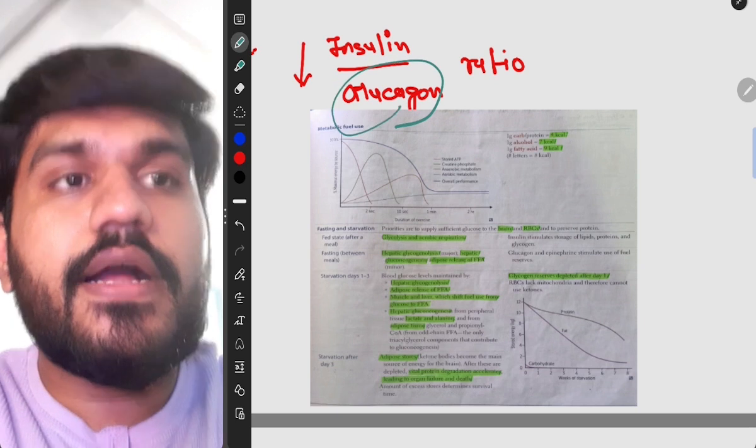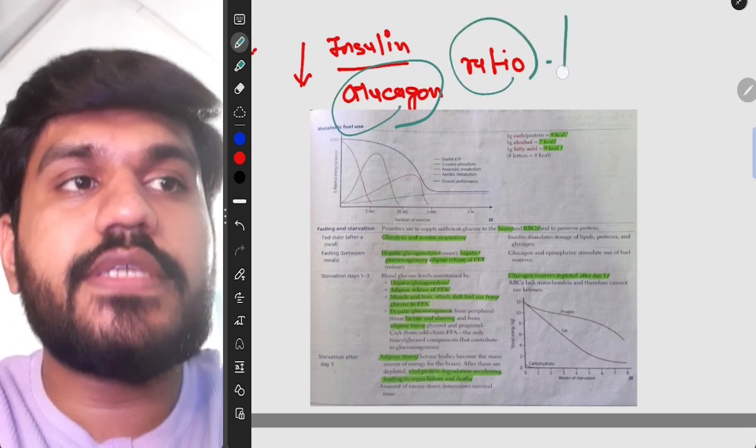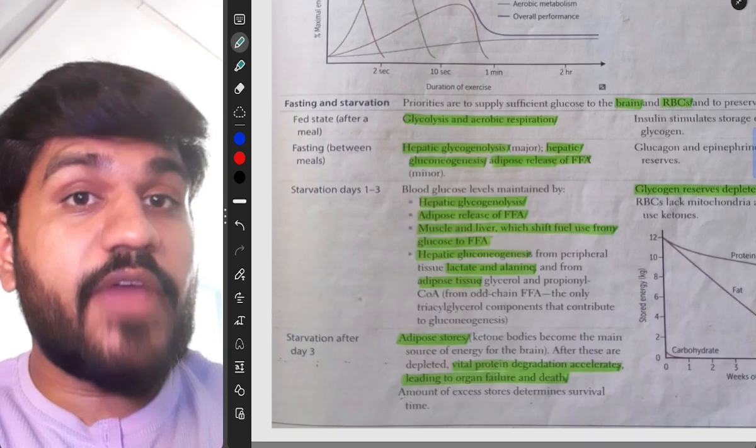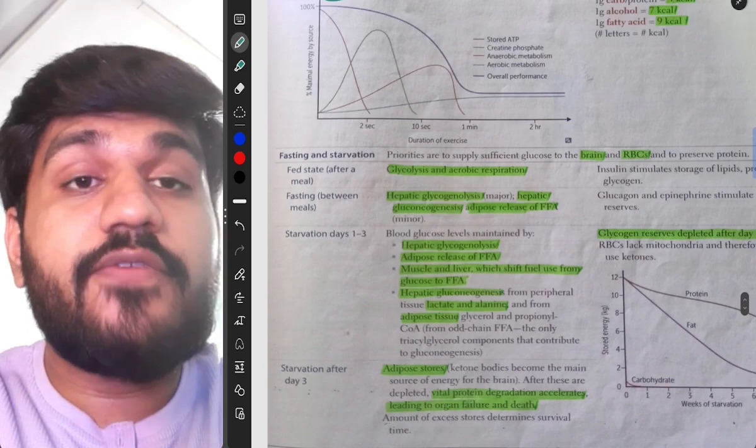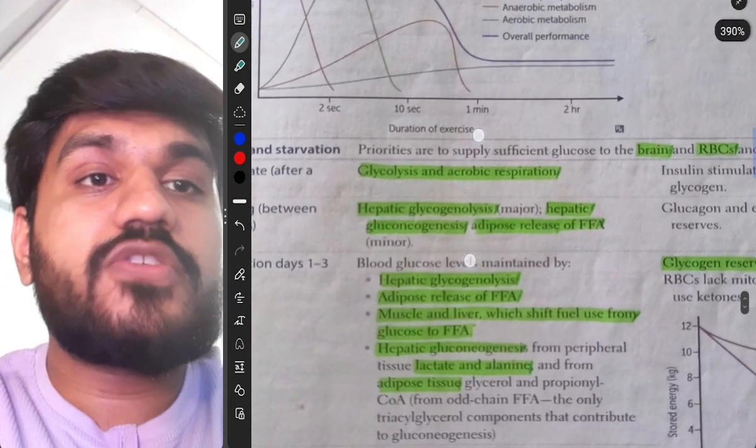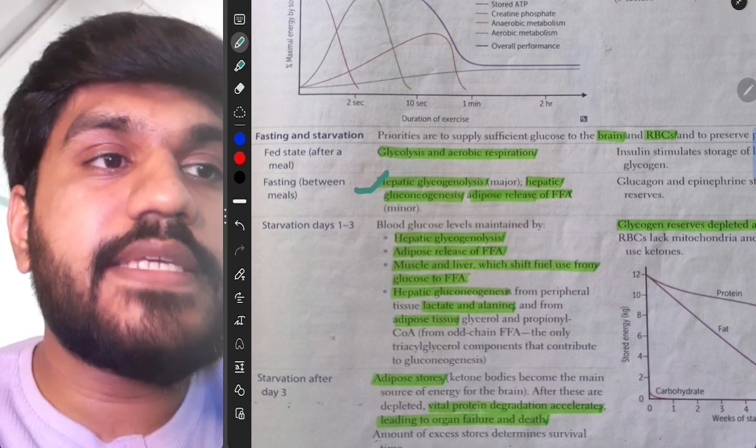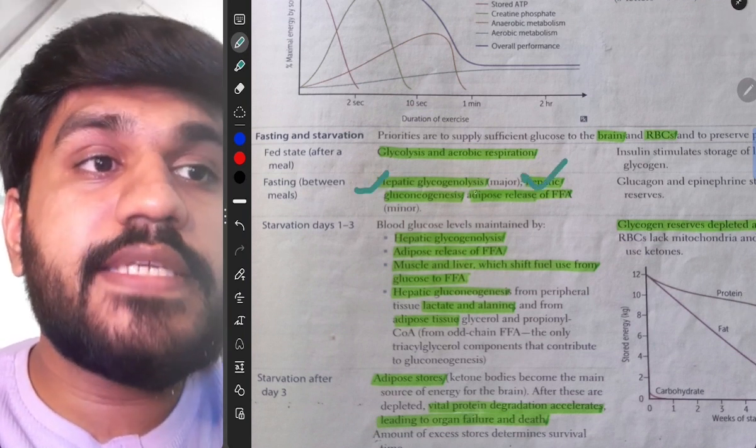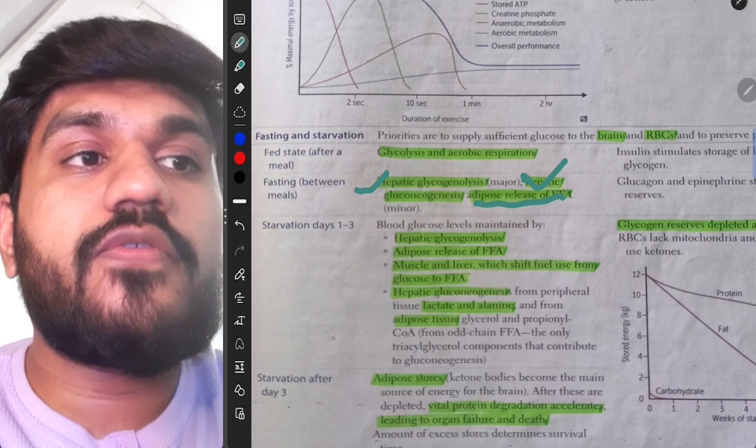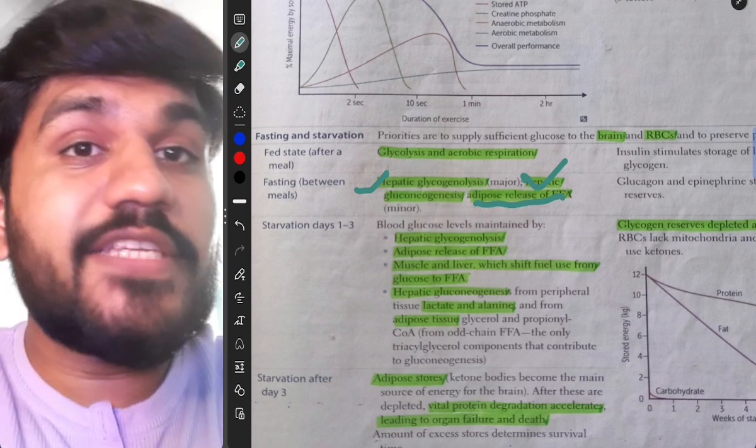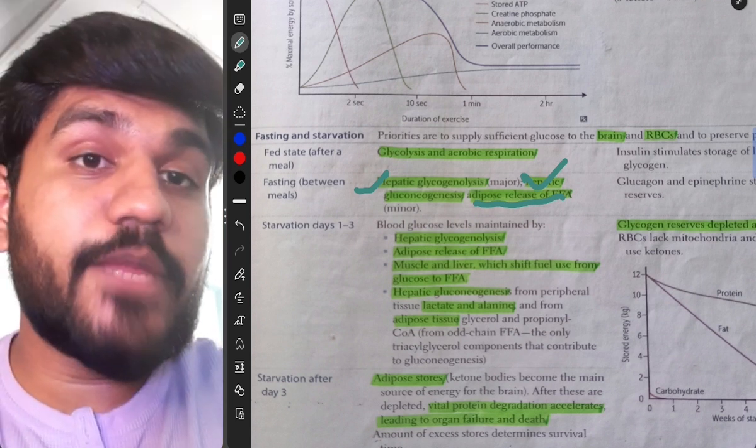Ninth question was if our insulin glucagon ratio falls, what happens? In this glucagon is getting higher and that's why our ratio is falling. So you have to know that when glucagon is high, glucagon is high when we are fasting. So when we are fasting what occurs? Hepatic glycogenolysis, hepatic gluconeogenesis and adipose release of free fatty acid.